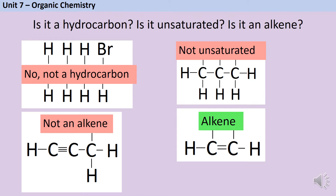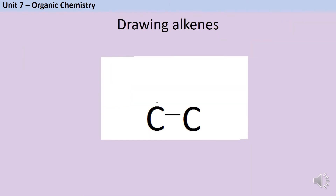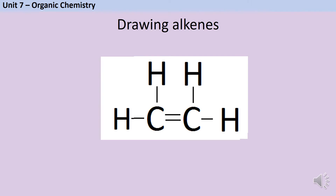Drawing alkenes is straightforward if you're already confident drawing alkanes. We start with a carbon-carbon chain, then draw a double covalent bond between two of the carbon atoms. When drawing larger alkenes, the double bond is only between two of the carbon atoms, not the whole way along the chain. Then we fill in the hydrogens — each carbon atom can make four bonds in total. Here both carbon atoms have already made two bonds so they each need two more hydrogen atoms. This is the first alkene, called ethene.